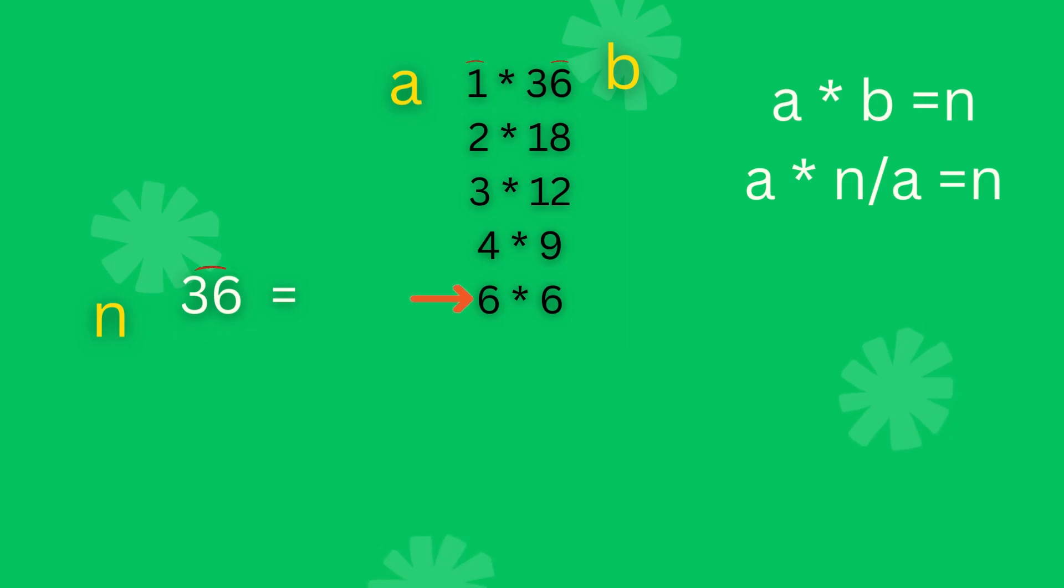So the max value of a is 6, and 6 is nothing but the square root of 36. So rather than checking for all values till n-1, we only have to check till square root of n.